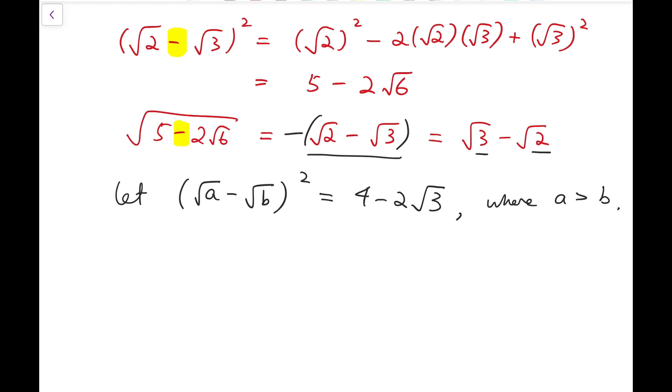So now let's try to solve this. From our results above, if we try to expand that, I'll get root a squared minus 2 times root a times root b plus root b all squared equals 4 minus 2 times root 3. So simplifying, I'll get a plus b minus 2 times root ab equals 4 minus 2 times root 3.